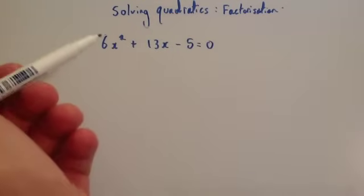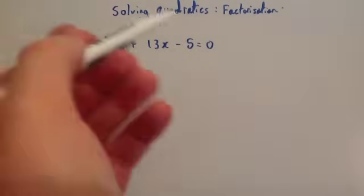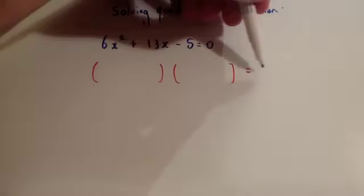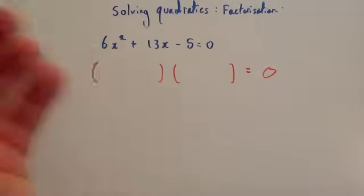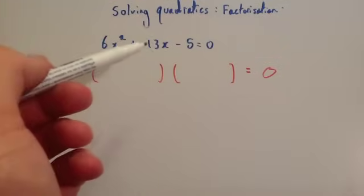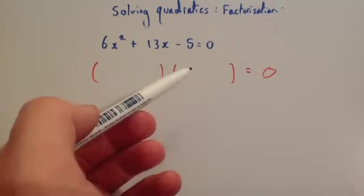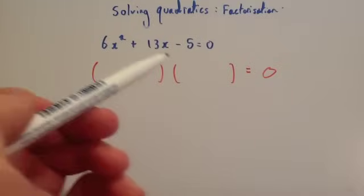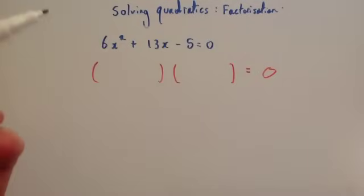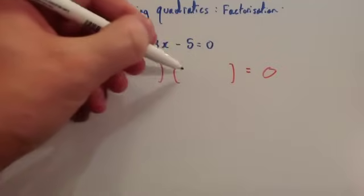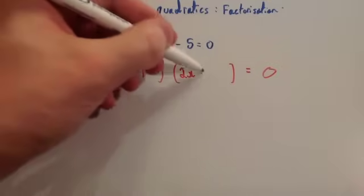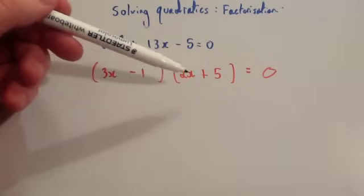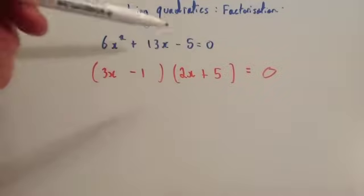This time we've been asked to solve 6x squared plus 13x minus 5 equals zero. Again, factorise because it equals zero. You've got 6x squared, so you could have 6x and x, or 3x and 2x. The two numbers multiply to give minus 5, so one is 1 and one is 5 with opposite signs. Trying 3x and 2x with minus 1 and plus 5: 3x times 2x is 6x squared, 3x times 5 gives 15x, take away 2x gives 13x, and minus 1 times 5 gives minus 5. That works.